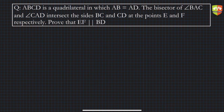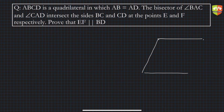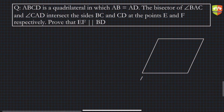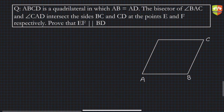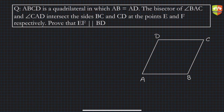Since a diagram is not given, let's first draw one. So we have a quadrilateral — let's say it looks like a parallelogram but that's okay — with vertices A, B, C, and D. Now we need to draw the angle bisectors, so first let's join AC.